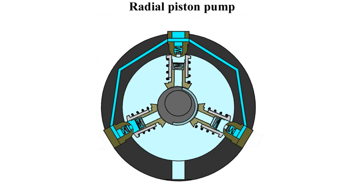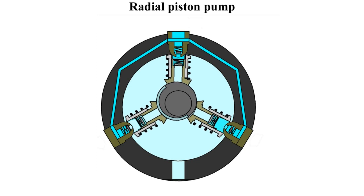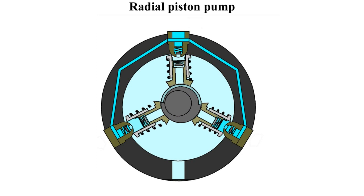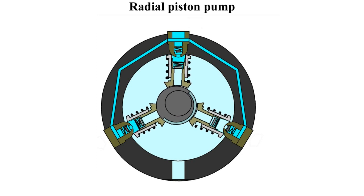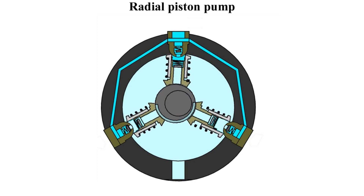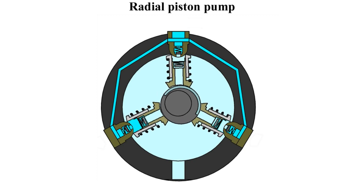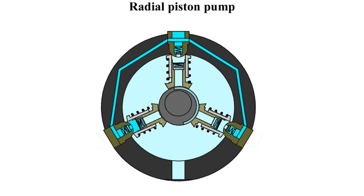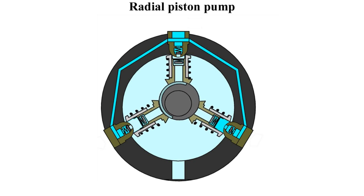When the piston is at the upper idle point, the suction valve and pressure valve are closed. As the shaft rotates, the piston moves in the direction of the center axis of the eccentric. The displacement chamber becomes larger and the suction valve opens due to the negative pressure produced. Fluid flows into the displacement chamber.